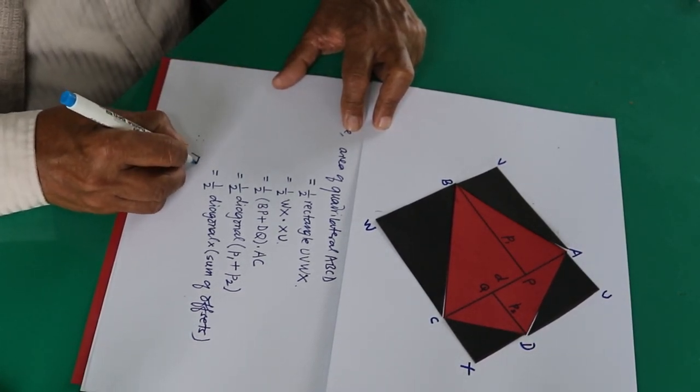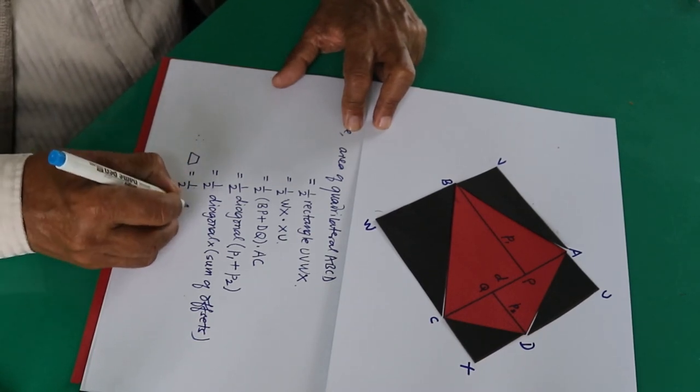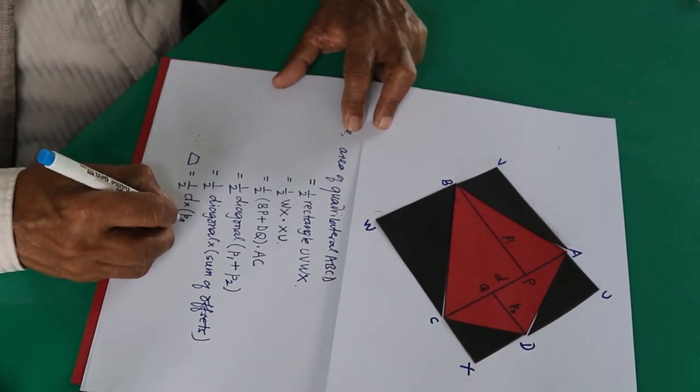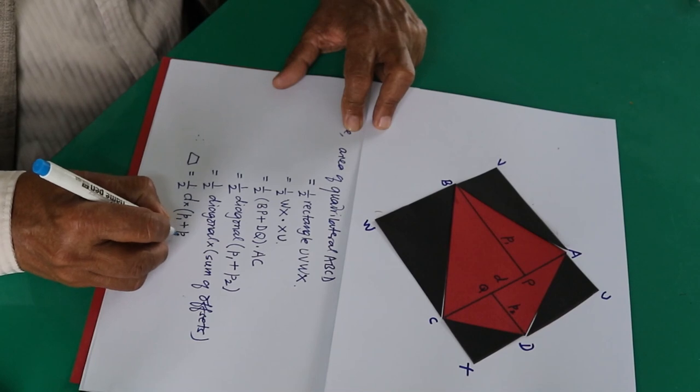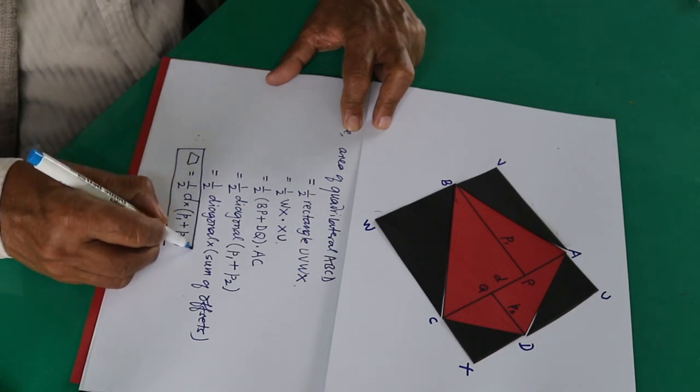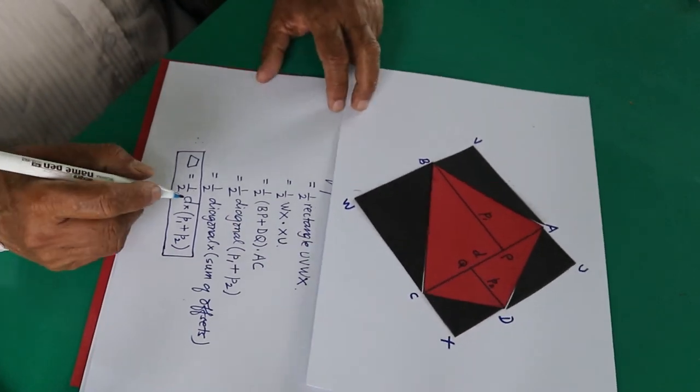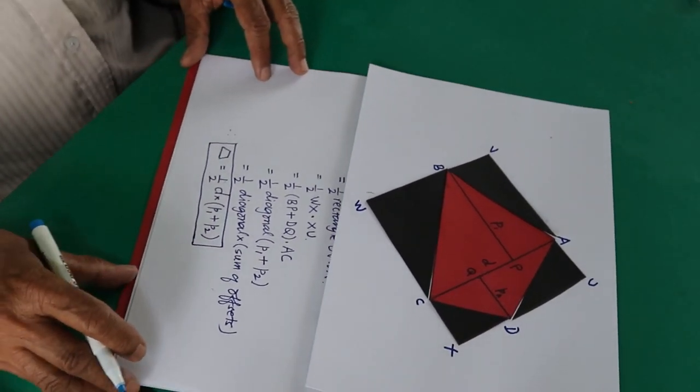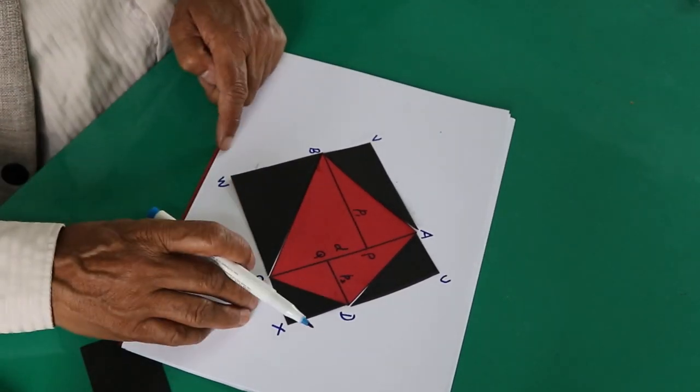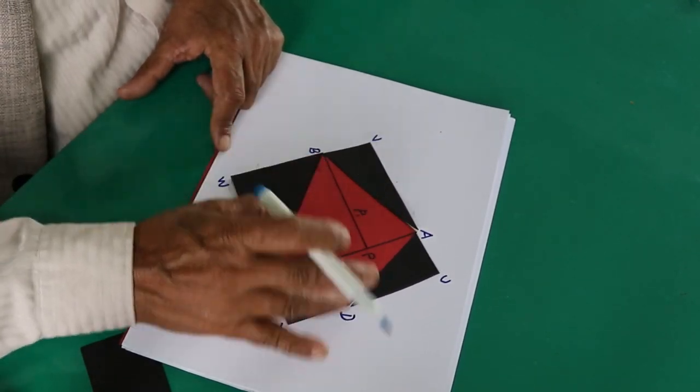Therefore, let the area of the quadrilateral be abbreviated by the quadrilateral itself. This is equal to half. This stands for diagonal D. P1 stands for offset 1, and P2 stands for offset 2. Therefore, the area of the quadrilateral is equal to half diagonal into sum of offsets. This way the area of the quadrilateral is generalized by using two congruent quadrilaterals and cutting them along diagonal and the offsets.